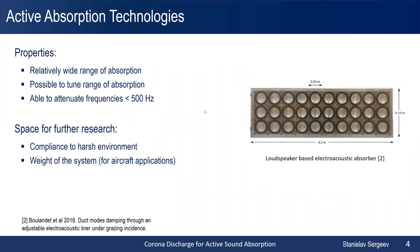Here is an example of an electroacoustic absorber built from an array of loudspeakers. But talking again about aircraft applications, the compliance of this unit to a harsh environment can be quite questionable, because of the fragility of the membrane of the loudspeaker, and also the weight of the system can be quite large, because every unit contains a copper coil and a permanent magnet. This is our motivation to develop an alternative actuator which can substitute this in active sound absorption techniques.